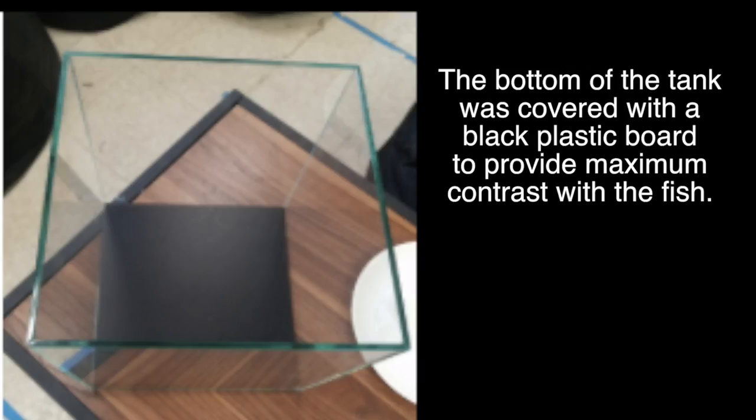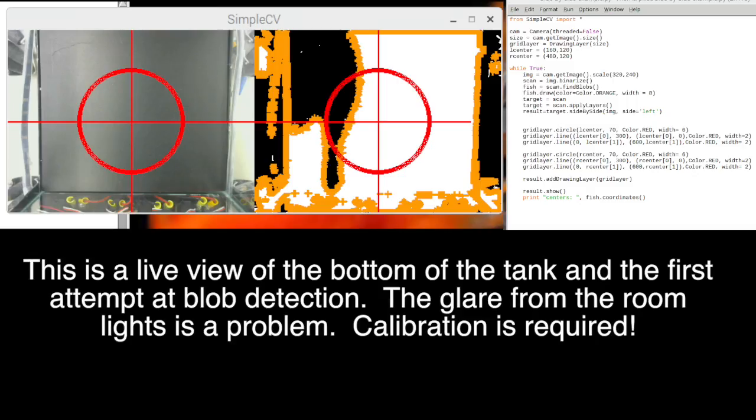The bottom of the tank was covered with a black plastic board to provide maximum contrast with the fish. This is a live view of the bottom of the tank and the first attempt at blob detection. The glare from the room lights is a problem. Calibration is required.